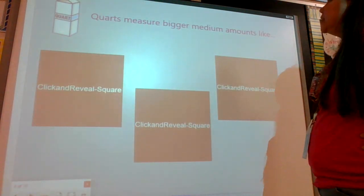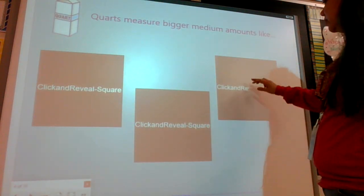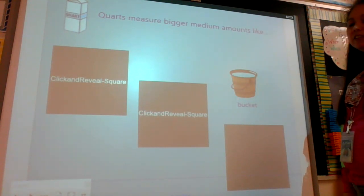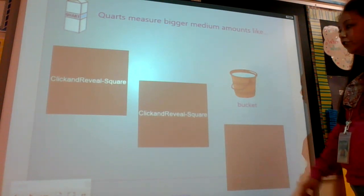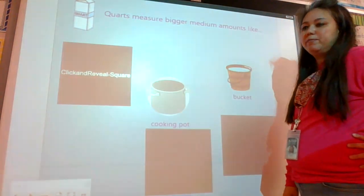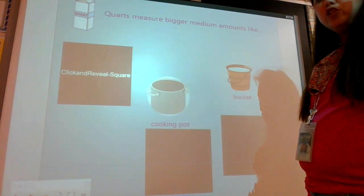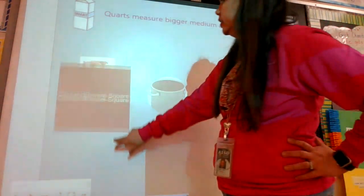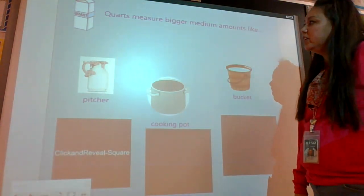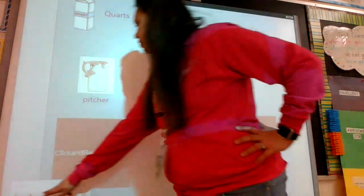Quarts measure medium amounts, such as a bucket. You'd want to use a quart for a bucket, for sure. Smaller than a gallon, but it's still quite a bit. A large cooking pot and a pitcher—those are good things to measure with quarts.